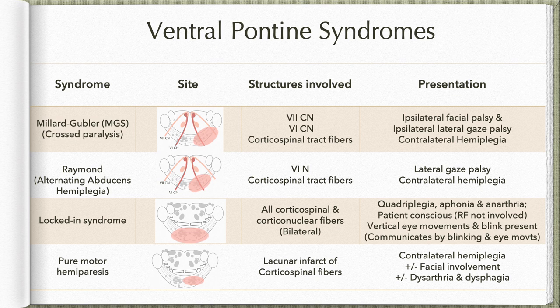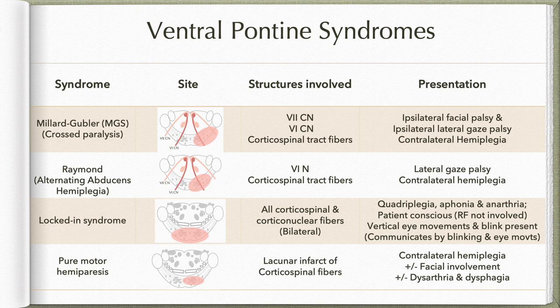Locked-in syndrome involves the entire ventral basilar pons bilaterally, so all descending fibers from the cortex — including corticospinal and corticonuclear fibers — are involved. Since the level is the pons, fibers that relay in the midbrain have escaped. With bilateral corticospinal tract involvement, the patient has quadriplegia. Descending fibers to the nucleus ambiguus are involved, resulting in aphonia and anarthria. Corticonuclear fibers to the facial nerve nucleus are also involved, causing lower facial palsy.